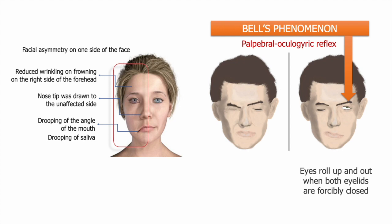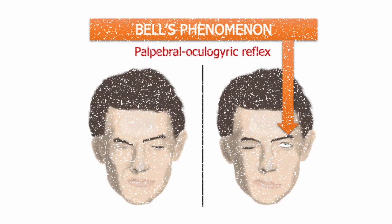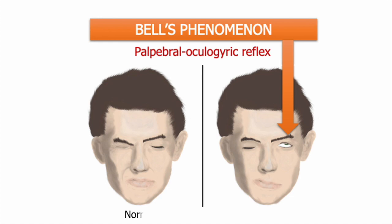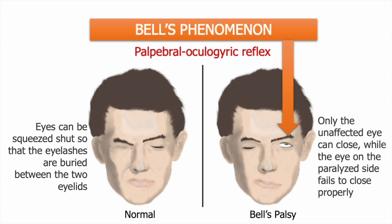In Bell's palsy, this movement is seen because the eyelids fail to close properly. Bell's phenomenon is important in evaluating facial palsy. In normal people, the eyelids can be squeezed shut such that the eyelashes are buried between the two eyelids. However, only the unaffected eye can complete this action when the facial nerve is injured. The eye on the paralyzed side fails to close properly. In testing facial nerve function, the strength of the orbicularis muscle is assessed by attempting to open the eyes against resistance, at which point Bell's phenomenon is observed.